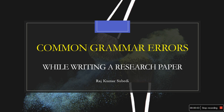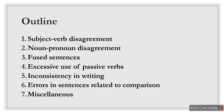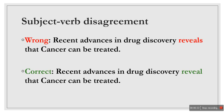Hello everyone, this is Raj. In this video I'll be talking about some of the most common grammar errors in scientific writing. I have categorized them as follows: subject-verb disagreement, noun-pronoun disagreement, fused sentences, excessive use of passive verbs, inconsistency in writing, errors in sentences related to comparison, and some other errors which I have put in a miscellaneous section.